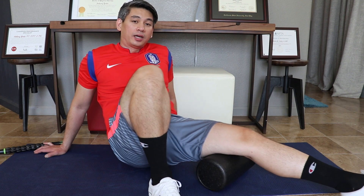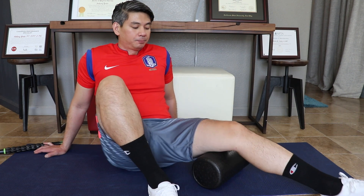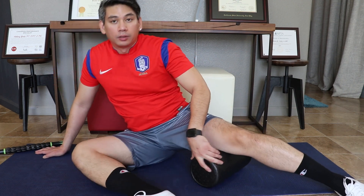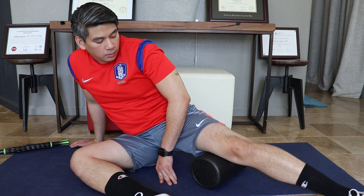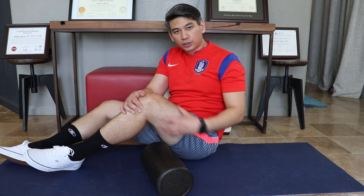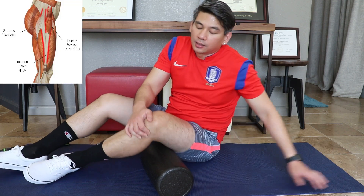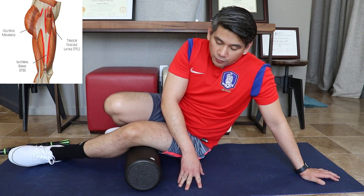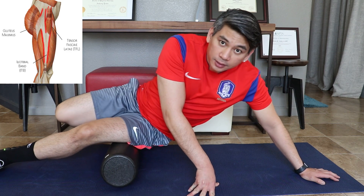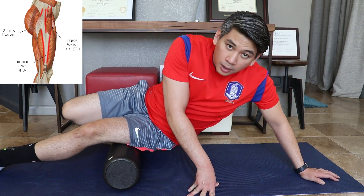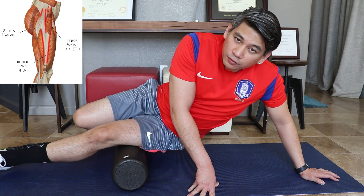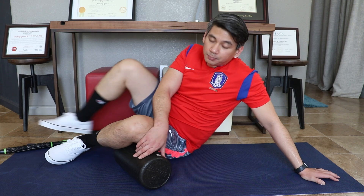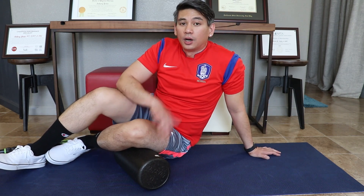Move on to the back of your thigh — same concept. Hang out and go slower on areas that are tight. You can go to the inside of your thigh by rotating inward. Then if you want to hit the outside, be careful — you have a structure called your IT band around your knee that can get a little tight and this can be uncomfortable. Do as much as you can tolerate, maybe five minutes, or start with one minute and work your way up to five.